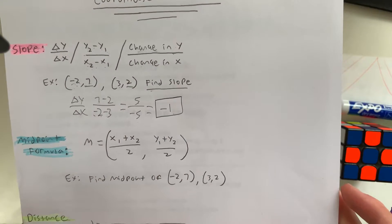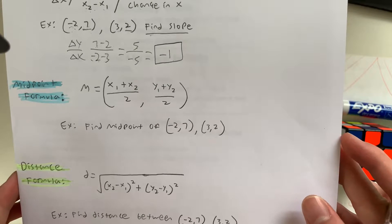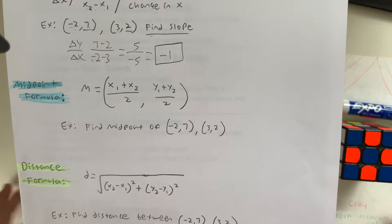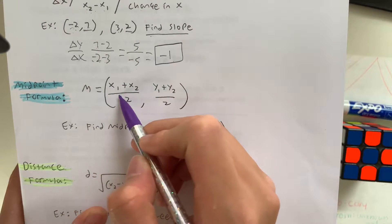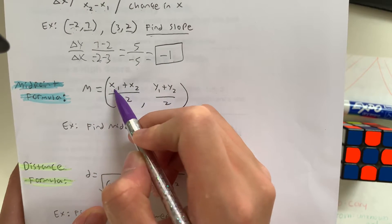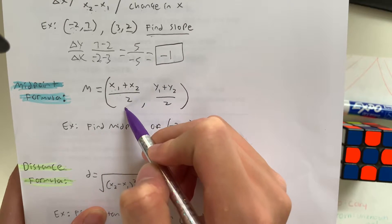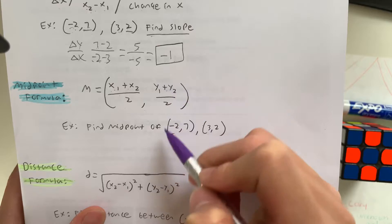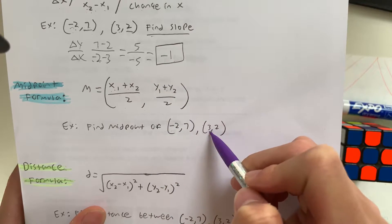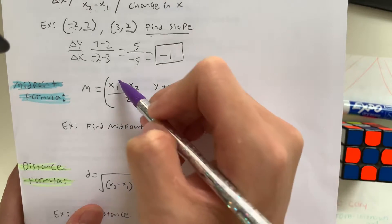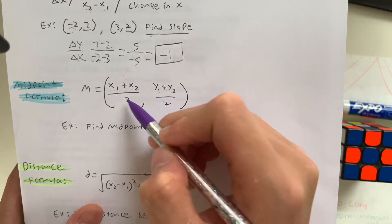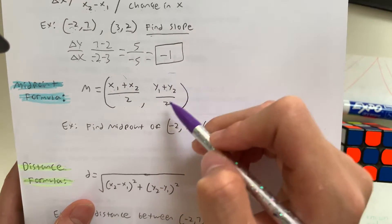So what do we have next? We have the midpoint formula, which is used to find the midpoint. Given two points, you add the x values and divide by 2. And to find the y value of the midpoint, you add the y values of the two separate points and then divide by 2. This gives you a coordinate — the x value and the y value of the midpoint.